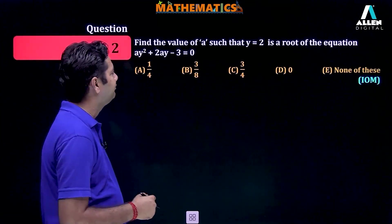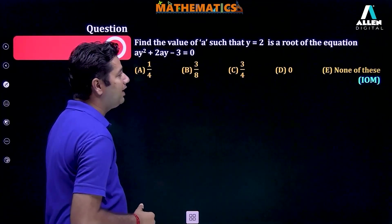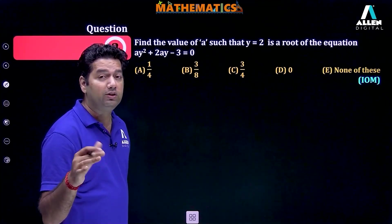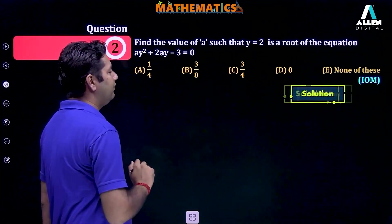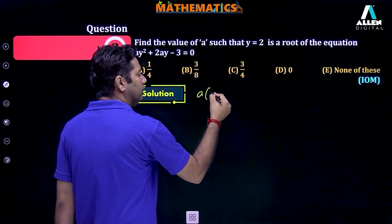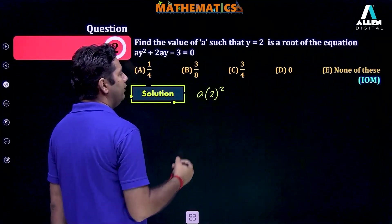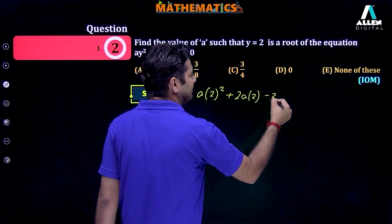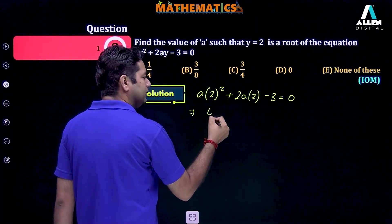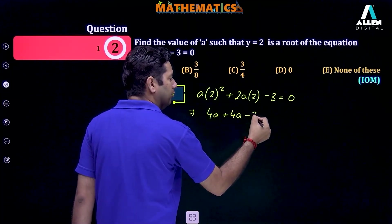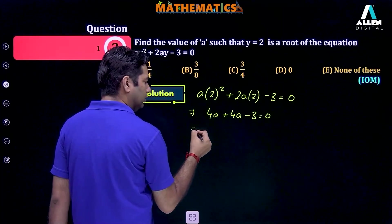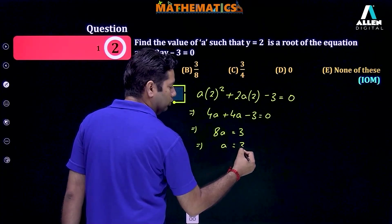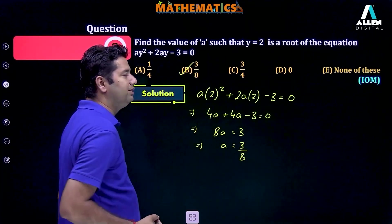Moving to the next question: find the value of a such that y equals 2 is the root of the given equation. Since y equals 2 is the root, it means 2 will satisfy this given equation. So we can write a multiply by 2 square plus 2a multiply by 2 minus 3 equals 0, which means 4a plus 4a minus 3 equals 0. This means 8a equals 3, or the value of a equals 3 by 8. So option B is the correct one.